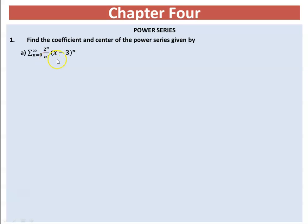So e to the power of n over n factorial is the coefficient of this power series. The value that makes the inner expression inside the bracket zero is considered to be the center. So the value that makes the inner expression zero is 3 — therefore 3 is the center, whereas e to the power of n over n factorial is the coefficient. Identifying these two is very important because later when we discuss interval of convergence and radius of convergence, we will apply these two concepts in detail.